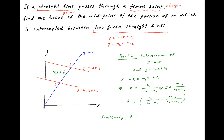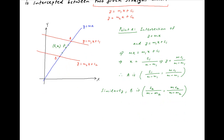Similarly, the coordinates of point B are (c2 upon (m minus m2), mc2 upon (m minus m2)). Now, the point P with coordinates (H, K) is the midpoint of the segment AB.